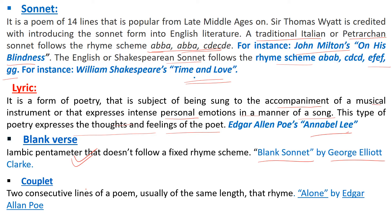Another literary term is couplet. A couplet consists of two consecutive lines of a poem, usually of the same length, that rhyme with each other. When a stanza has two lines written in pentameter that rhyme with one another, we call it a couplet. The rhyme scheme is AA, BB, CC, or DD — each pair of lines rhymes with the other.